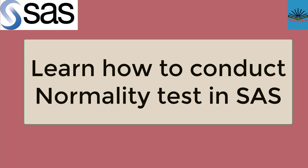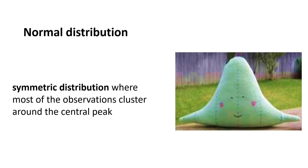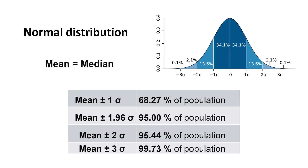Normal distribution is a symmetric distribution, as you can see in the picture. Take this picture as an example — this is a perfect symmetric distribution where most of the observations fall in the central area. That means most central tendency measures — mean, median, and mode — fall at the same point. For any normal distribution, which is a bell-shaped curve, mean is always equal to median and also equal to mode.